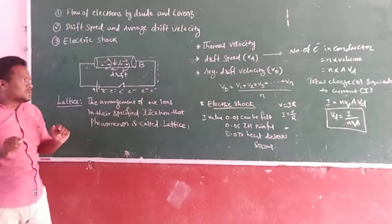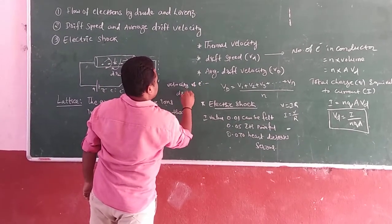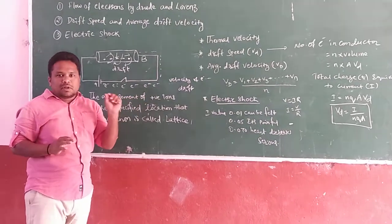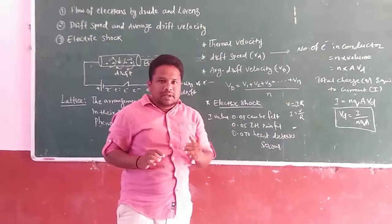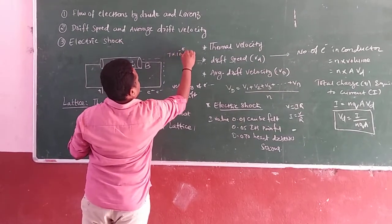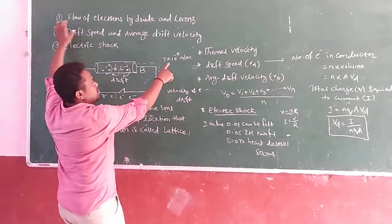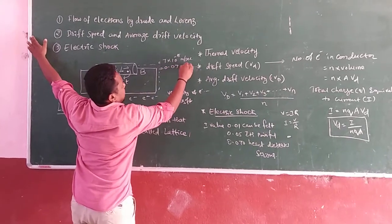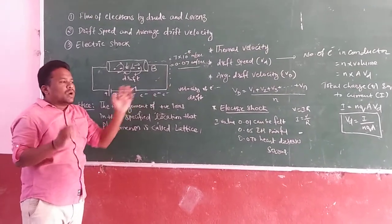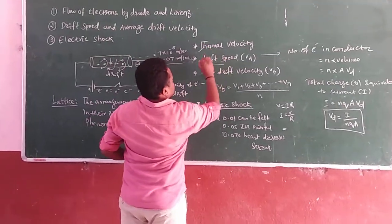The final definition of drift speed: drift speed is the velocity of electrons after the battery is connected, also called the speed of electron due to the applied electric field. Drift speed is always responsible for electric current — electric current is possible because of the drift speed of electrons. The drift speed of an electron is 7 × 10⁻⁵ meters per second, which can be converted to 0.07 millimetres per second. You must remember: drift speed is responsible for electric current.